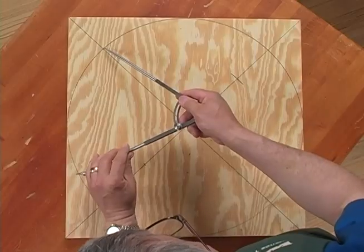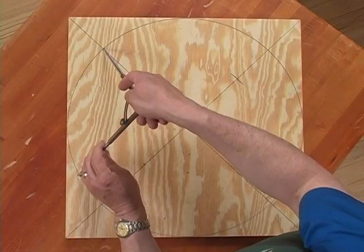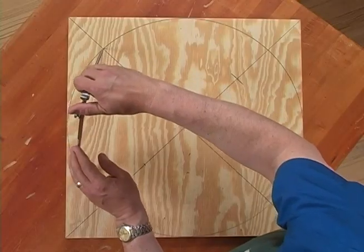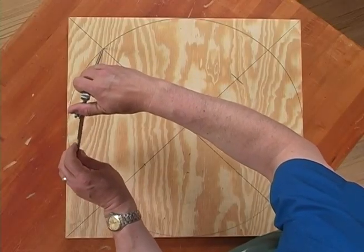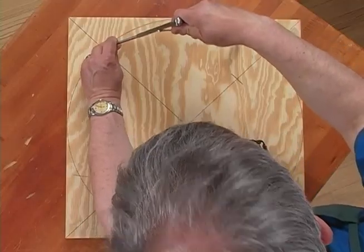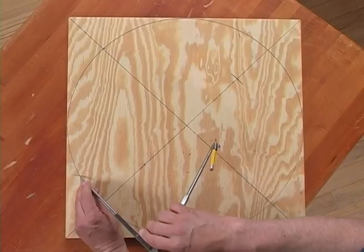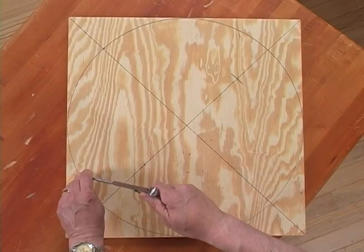A line here, move the compass arm to where we scribed this point and draw the fourth line intersecting the circle, and from that point we draw another line here.